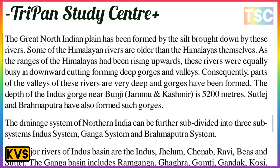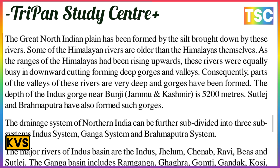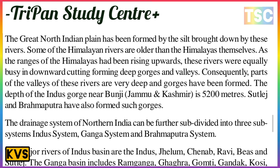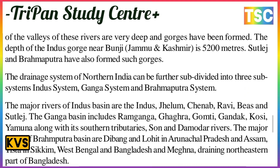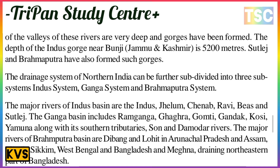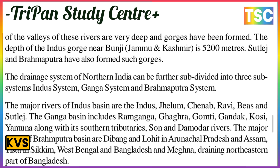The drainage system of northern India can be further subdivided into three sub-systems: the Indus system, the Ganga system, and the Brahmaputra system. The major rivers of the Indus basin are the Indus, Jhelum, Chenab, Ravi, Beas, and Sutlej.